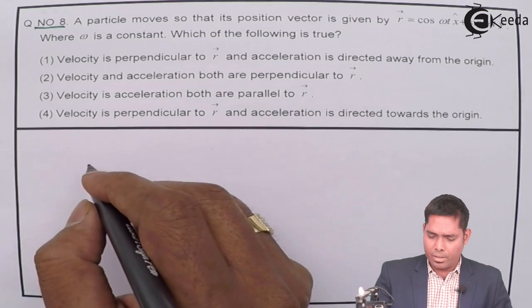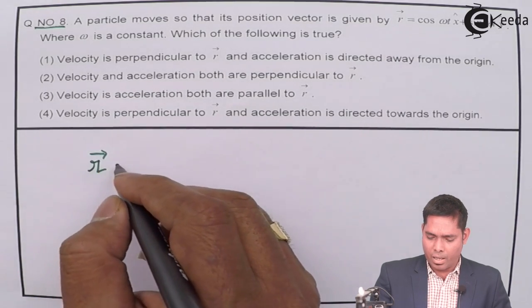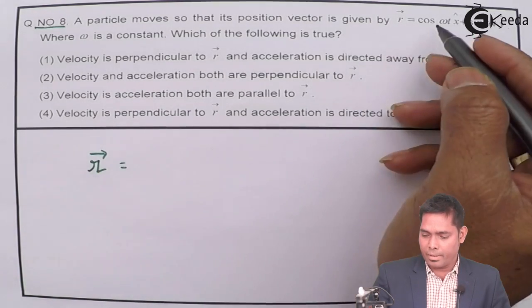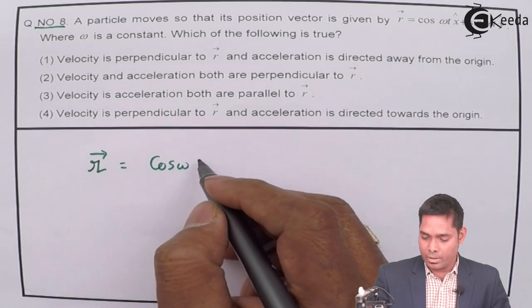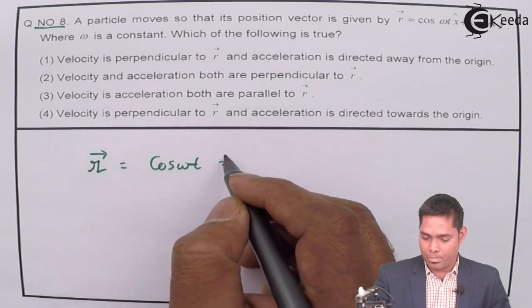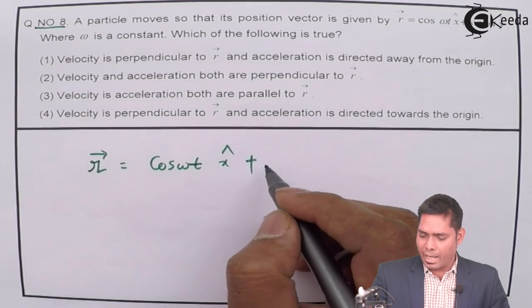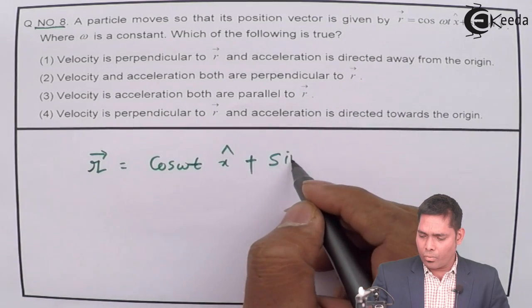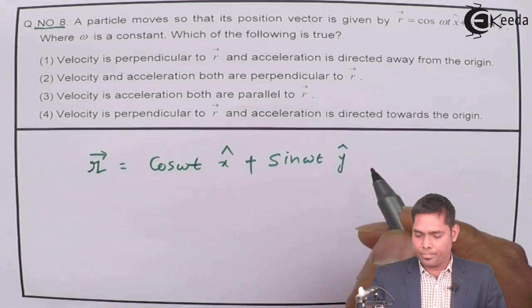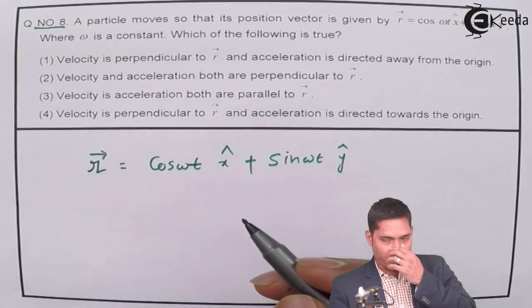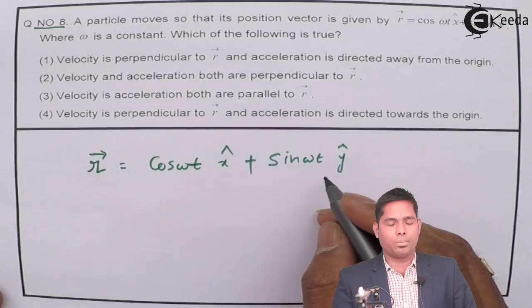If I write the position vector, r is given by cos(ωt) x-cap plus sin(ωt) y-cap. In place of x-cap and y-cap you can write i-cap and j-cap.